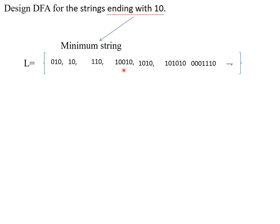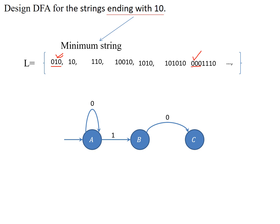These are the possible valid strings ending with one zero. Now we can go for the construction of the DFA. I'll start with the initial state A. We should accept zero-one-zero — zero can come at the beginning, and any number of zeros can appear at the start. So from A on zero we stay, then on one we go to B, and on zero we reach the final state C — this accepts zero-one-zero.